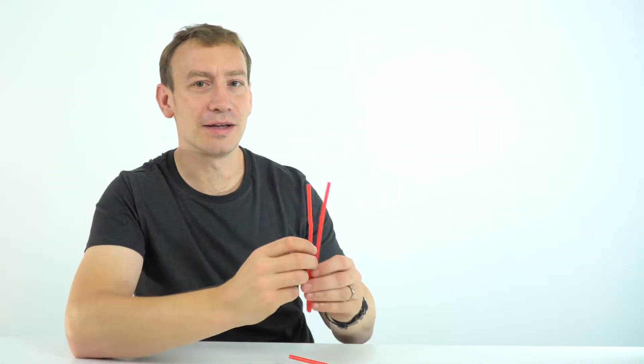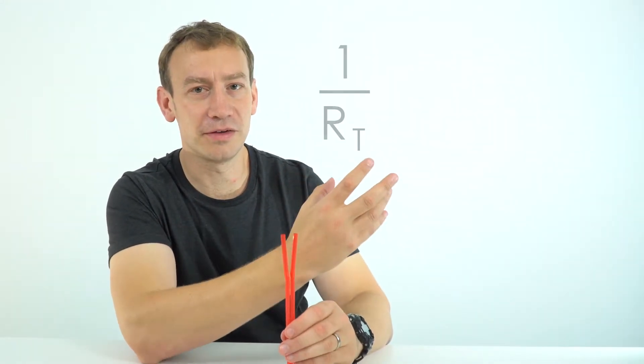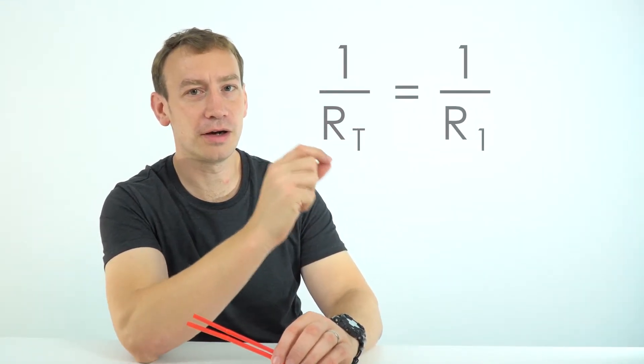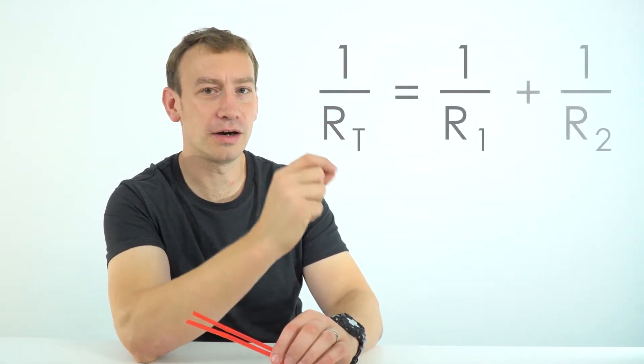But how do we calculate that? Well there's this equation over here, where RT is the total resistance, and actually what we can say is that 1 over RT is equal to 1 over R1 plus 1 over R2.